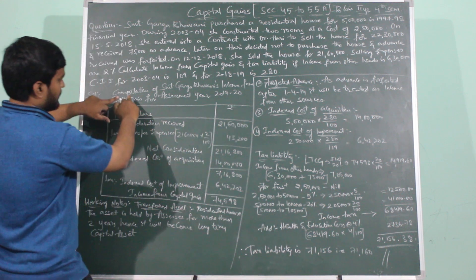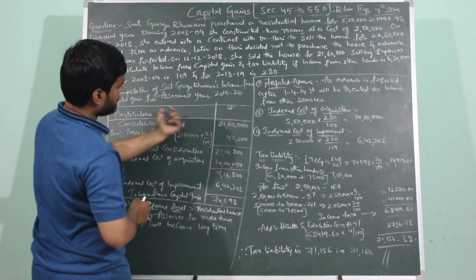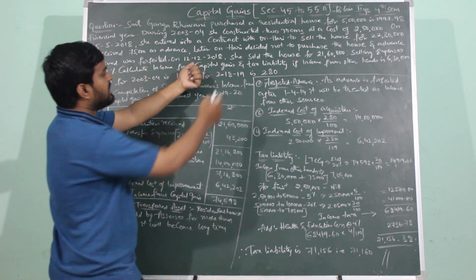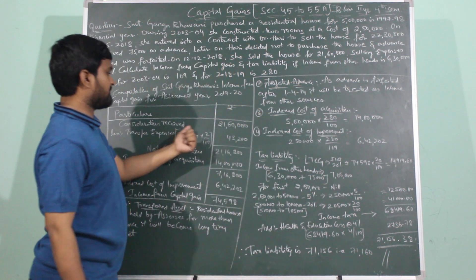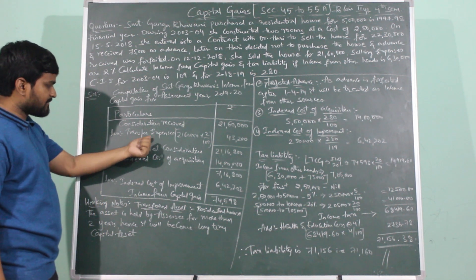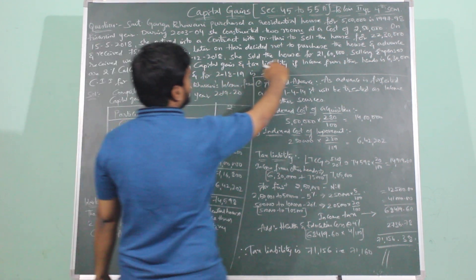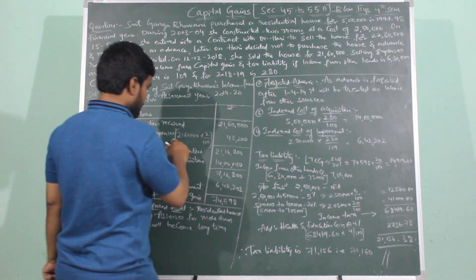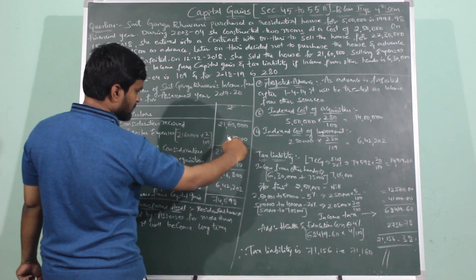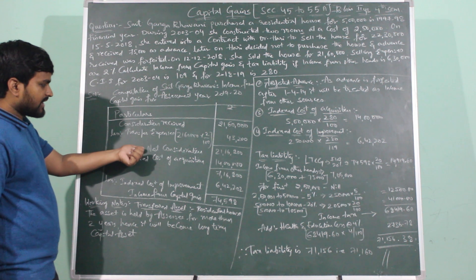Computation of Srimati Ganga Bhavani's income from capital gain for assessment year 2019-2020. Format: Particulars and Amount. First, consideration received — during the year 2018 on December 2nd she sold the house for Rs. 21,60,000. From this, selling expenses or transfer expenses are subtracted, which are 2% calculated on consideration received: 21,60,000 × 2 ÷ 100 = Rs. 43,200.